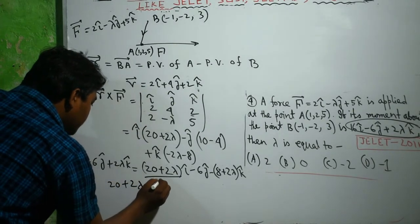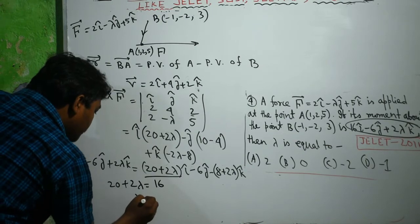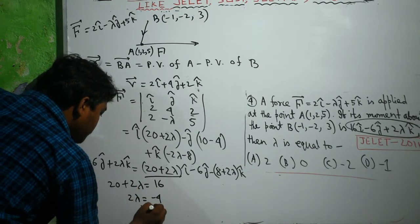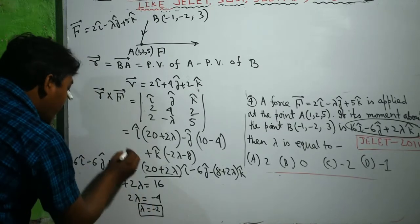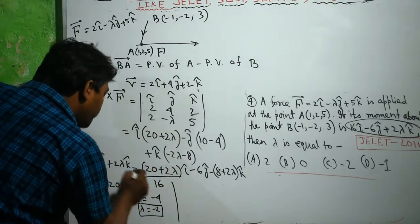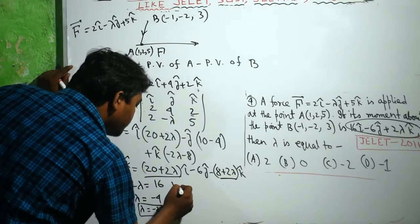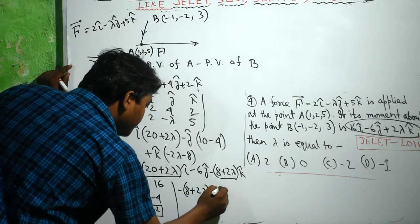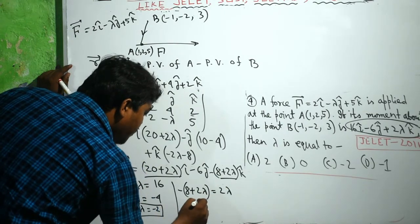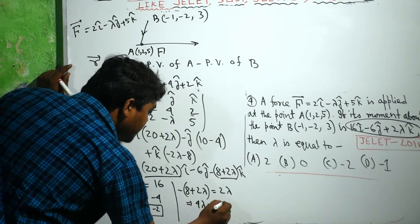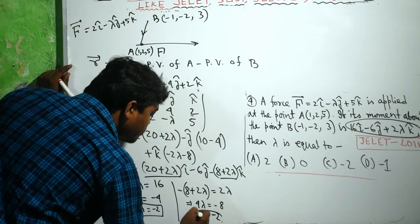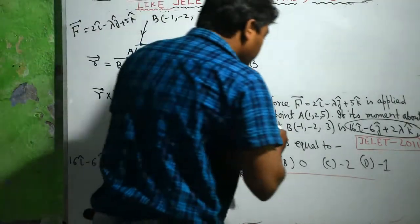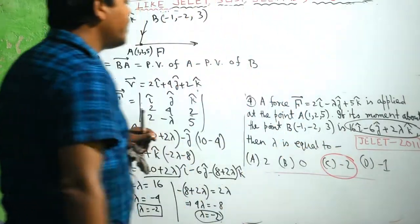Equating components: 20 plus 2 lambda equals 16, giving lambda equals minus 2. From the k-component: minus 2 lambda plus 8 equals 2 lambda, giving 4 lambda equals minus 8 and lambda equals minus 2. So the answer is lambda equals minus 2, option C.